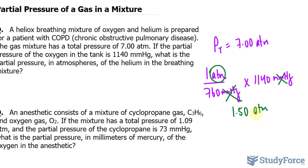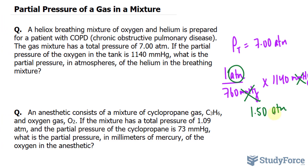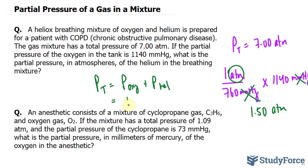Now, when it comes to partial pressures, they all sum up to the total pressure. So P_total equals the pressure of oxygen plus the pressure of helium. We already know the pressure of oxygen — it's 1.50 atmospheres. We don't know P of helium, but we do know the total, so this is as simple as rearranging the formula.